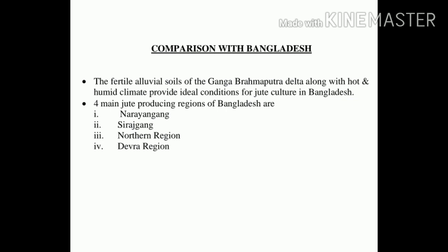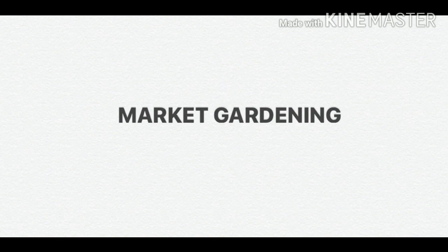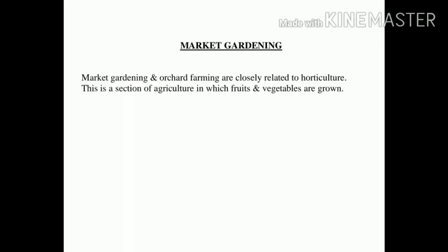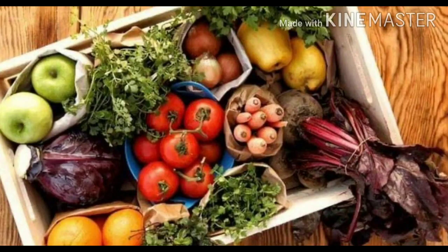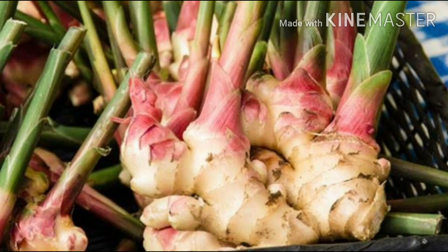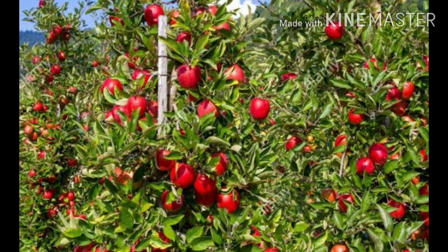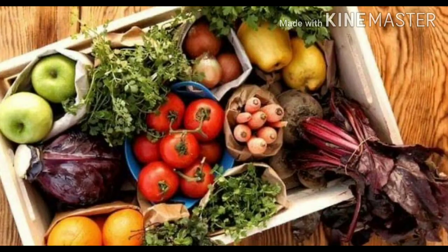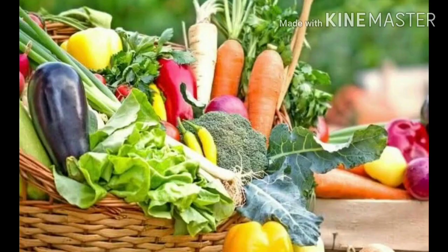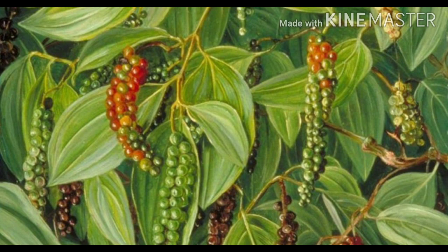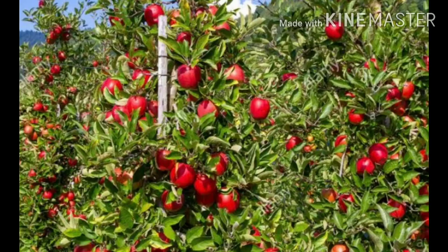Moving on, let us now talk about market gardening. Market gardening and orchard farming are closely related to horticulture. This is a section of agriculture in which fruits and vegetables are grown. India, with its wide variability of climate and soil, produces a large range of horticultural crops such as fruits, vegetables, potatoes, tropical crops, ornamental crops, medicinal and aromatic plants, spices and plantation crops like coconut, cashew nut, cocoa, etc. India has emerged as the largest producer of coconut, cashew nut, ginger, turmeric, black pepper, and the second largest producer of fruits and vegetables. Among the new crops, kiwi, olive crop and oil palms have been successfully introduced for commercial cultivation in the country. Some improvement is seen in the adoption of technology for raising their production as well.